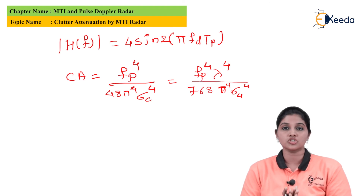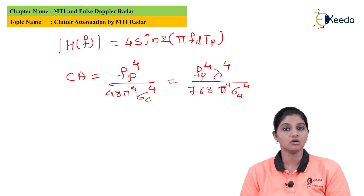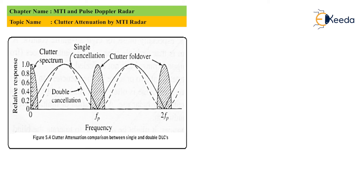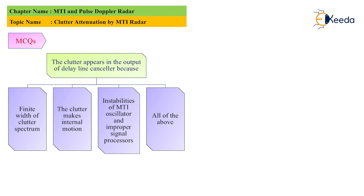Before moving to the MCQ part, let's look at the clutter attenuation comparison between single and double delay line cancellers. The clutter spectrum is present and the single canceller provides some clutter attenuation at the output of the MTI receiver, while clutter fold-over is also present at the frequency response. The first MCQ question is: the clutter appears in the output of the delay line canceller because of — option A: finite width of the clutter spectrum; option B: internal motion; option C: instability of MTI oscillator and improper signal processor; option D: all of the above. The answer is option D, all of the above.